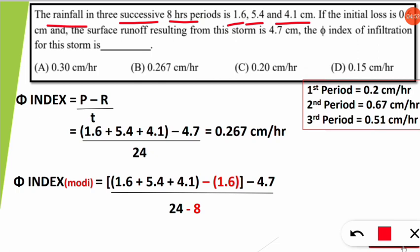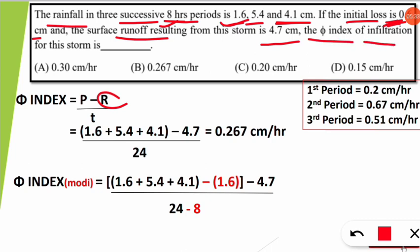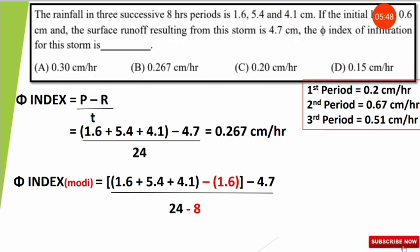The rainfall occurred in 3 phases. In the first 8 hours the rainfall was 1.6 cm, in the next 8 hours it was 5.4 cm, and in the third 8 hours it was 4.1 cm. The initial loss is 0.6 cm and the surface runoff resulting from this storm is 4.7 cm — that is the R given. The question asks: what is the phi index of infiltration for this storm? Options A, B, C, D are given.